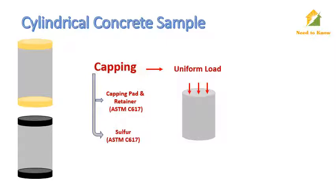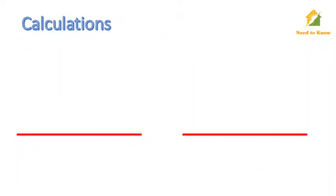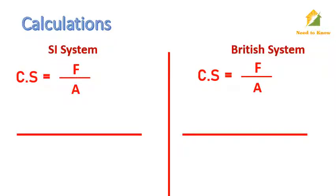After capping, subject the sample to loading and increase the load uniformly. Note the load at the break point in kilonewton or pound. Here we discuss the calculation procedure for both SI and British systems. This is the compressive strength formula, where CS is the compressive strength, F is the force or load at the point of failure, and A is the cross-sectional surface area under load.